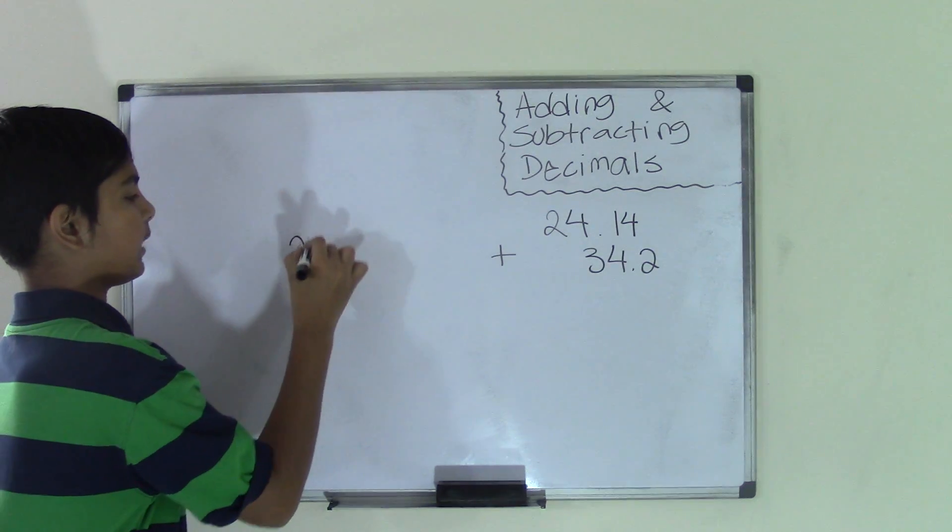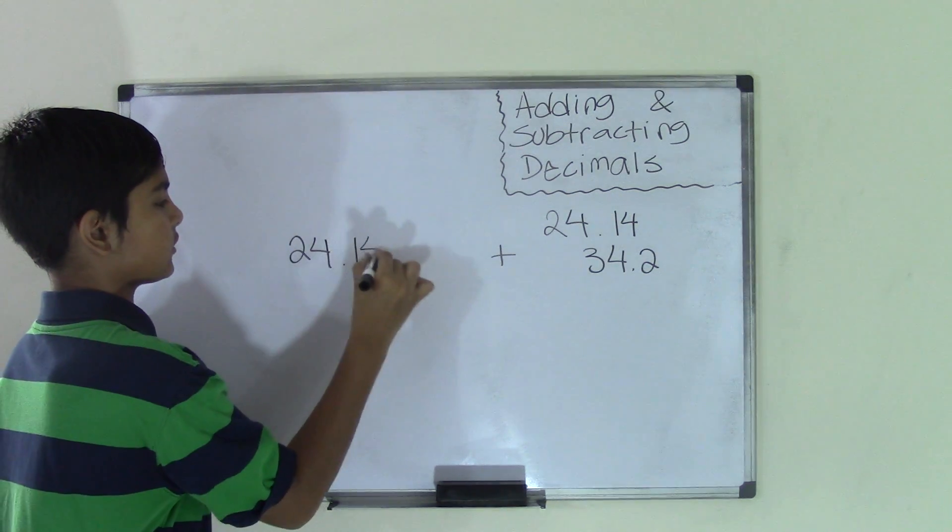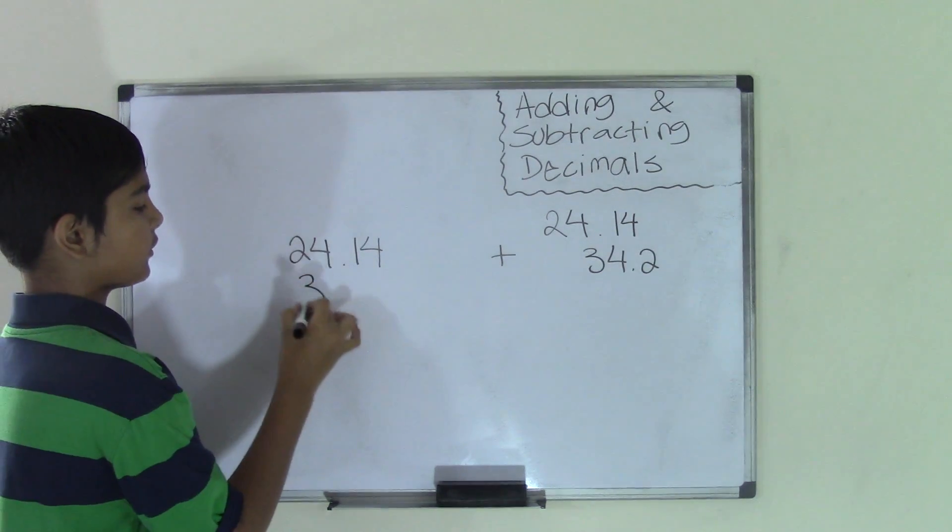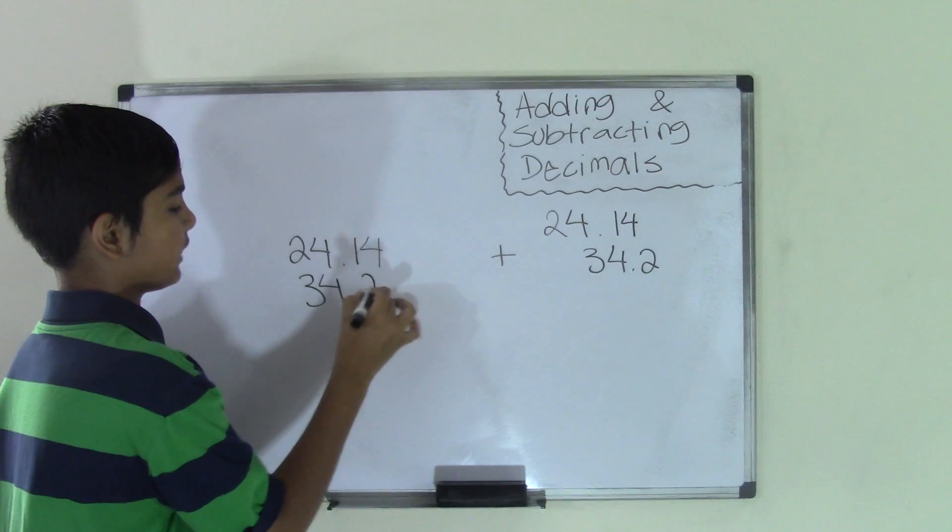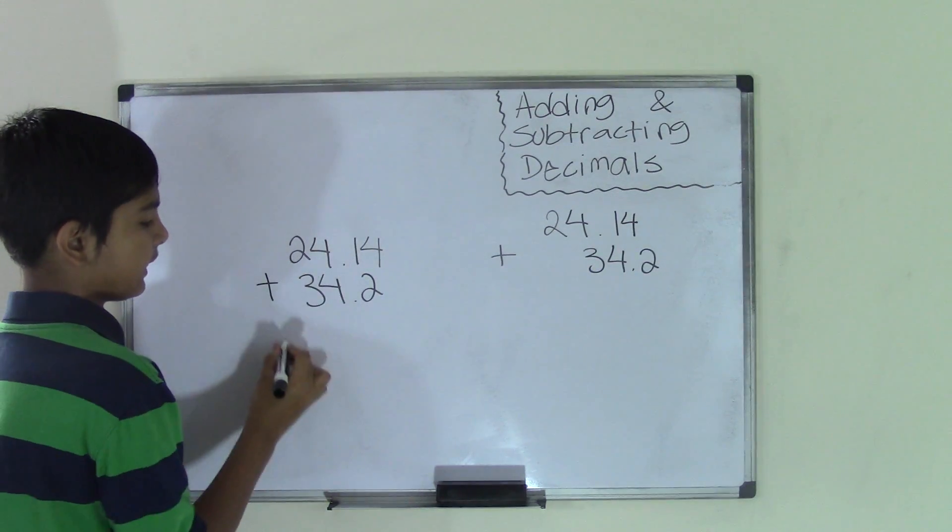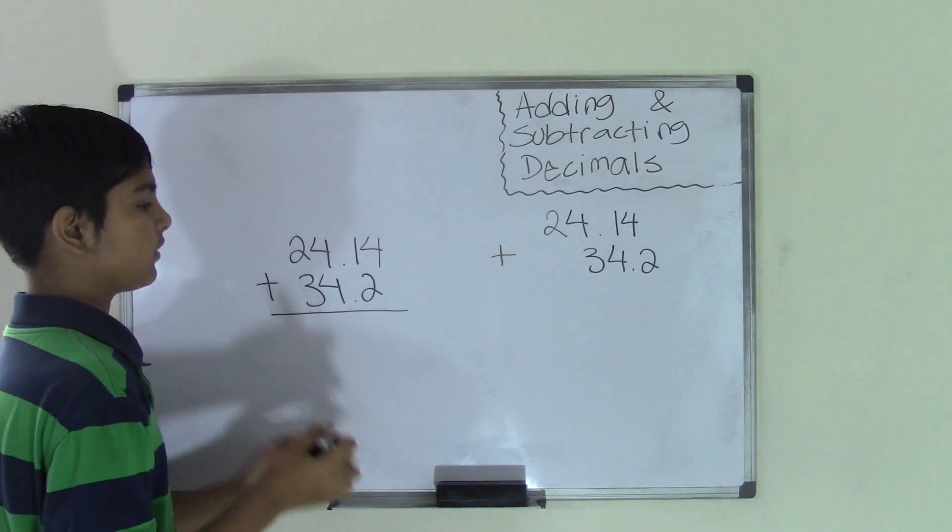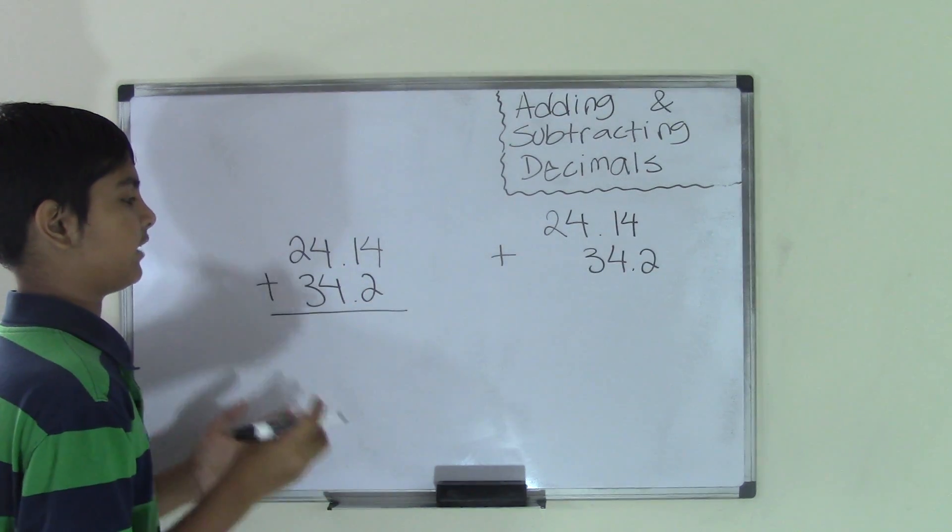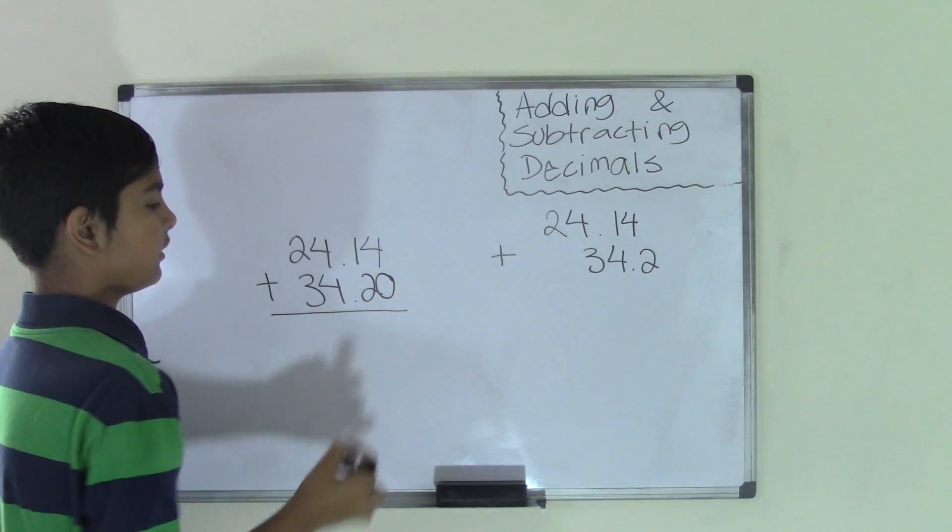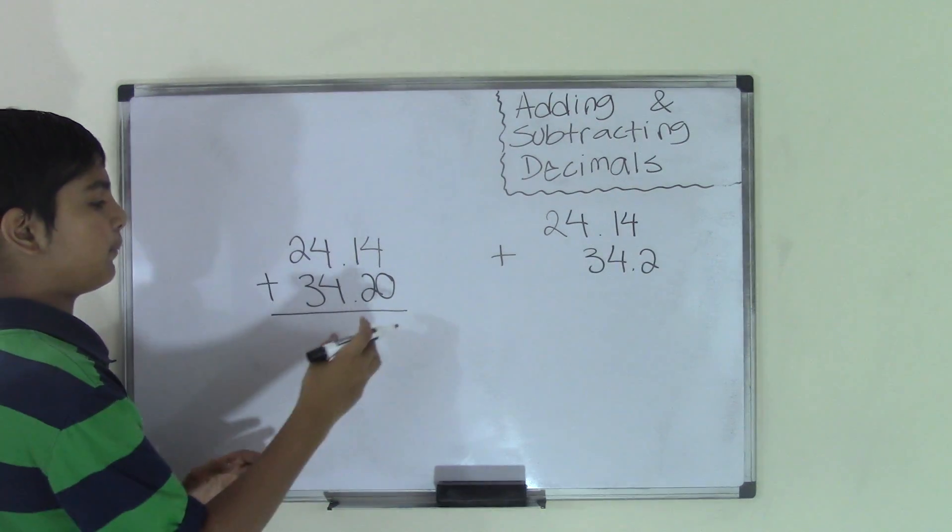So now the problem will look something like this. So 24.14. So now we have to write 34.2 so that we have the decimal points right on top of each other. Now you can add. Now sometimes you'll have spaces that are empty and you'll have no numbers in them. So you can add zeros there. So now we have 34.20.